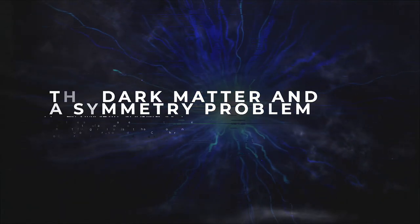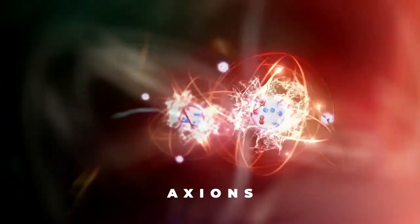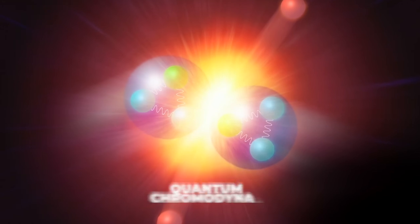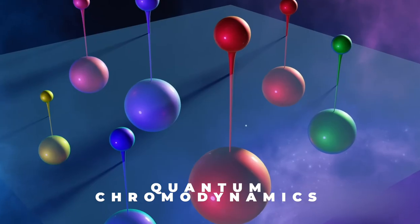The particle that may solve both the dark matter and a symmetry problem. Axions are a hypothetical fundamental particle that was introduced into the particle physics community in 1977. It was first proposed to solve a certain problem with quantum chromodynamics, which deals with the strong interactions between quarks.